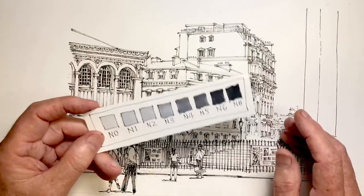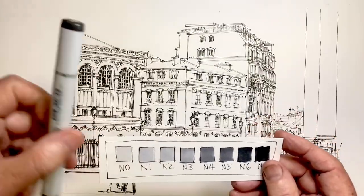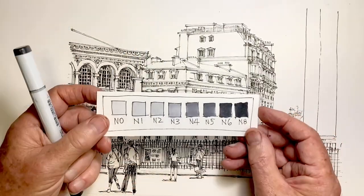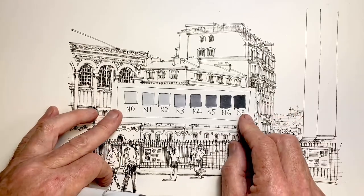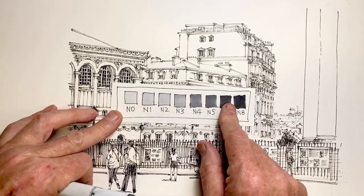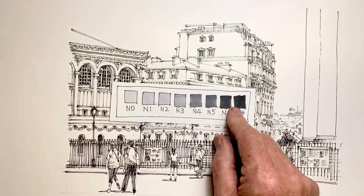But generally, before I take the cap off any of my pens, by using my color chart, I work out the lightest and the darkest tones that I intend to use.